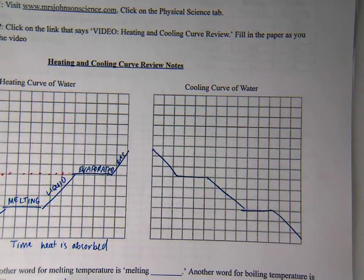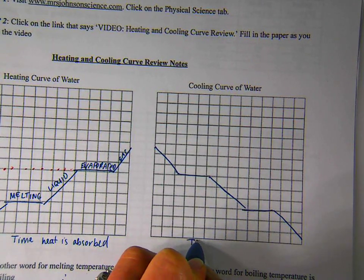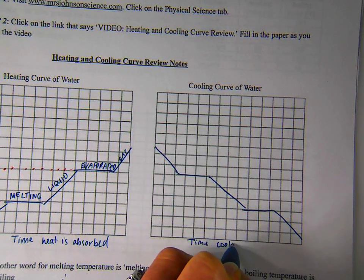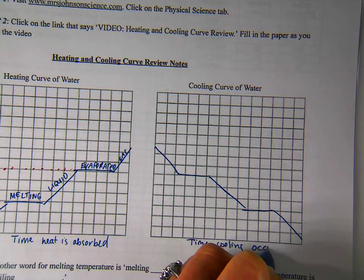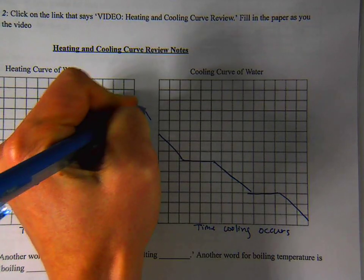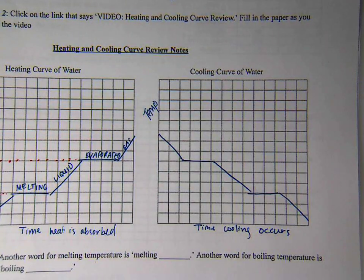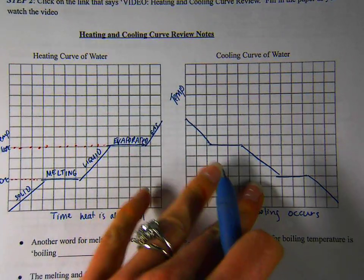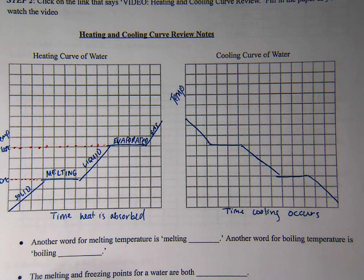So on the x-axis, we would be looking at time cooling occurs. So we're cooling the substance down, heat is being released and on this axis we've got temperature in degrees Celsius. So let's label each of our stair steps. We can see that it looks just like a reversed version of the heating curve.